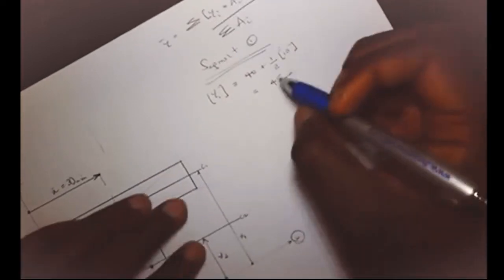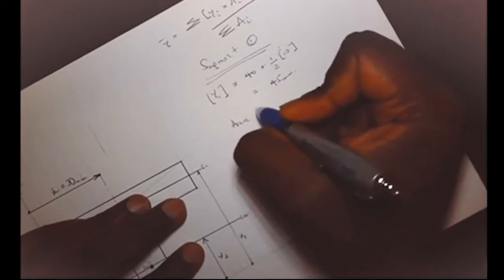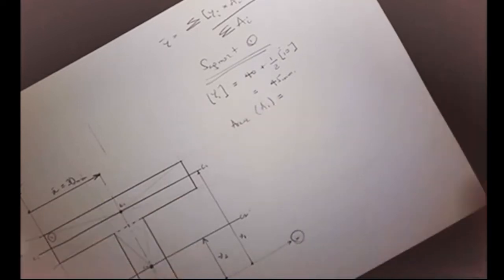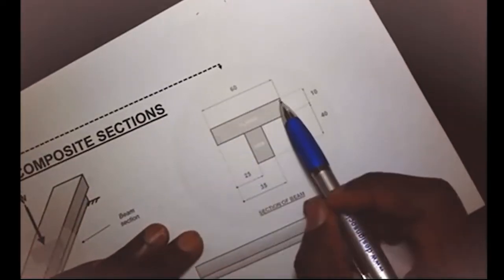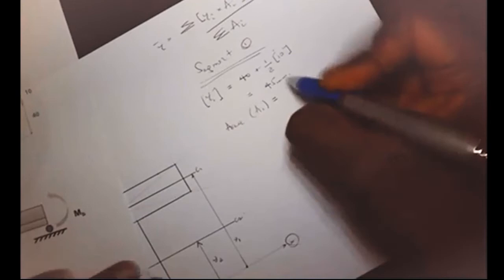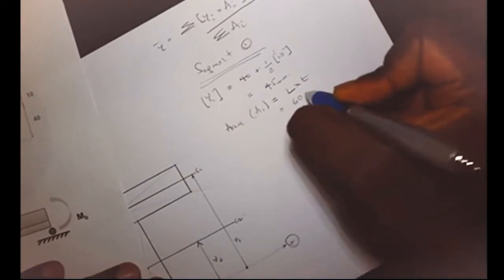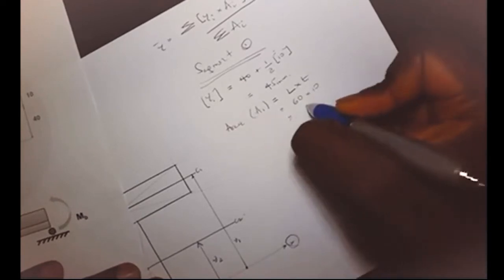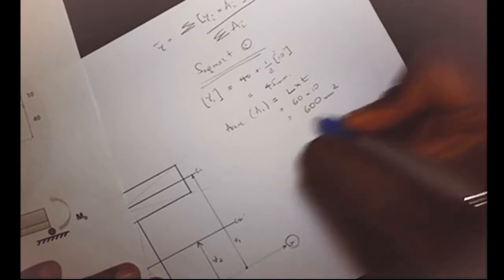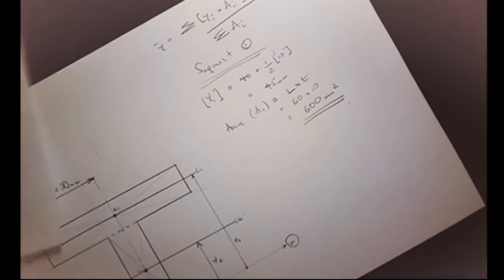We now need to calculate the area of segment one — a simple rectangle calculation. The length is 60 mm and the thickness is 10 mm, so A1 = 60 × 10 = 600 mm².